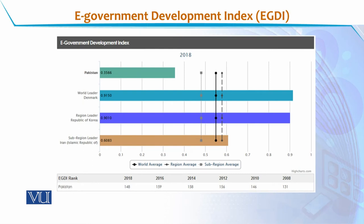First, we will see the overall composite score of the E-Government Development Index in 2018. The world leader was Denmark with a score of 0.9150. The regional leader is Korea with a score of 0.9010, which is slightly different from the world leader. The sub-regional leader is the Islamic Republic of Iran with a score of 0.6083. Pakistan's score is quite low compared to the sub-regional, regional, and world leaders — almost three times lesser than the world leader — at 0.3566.